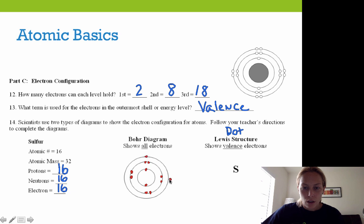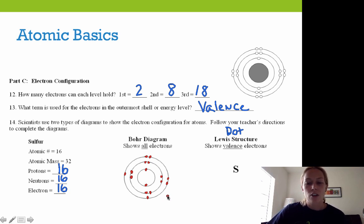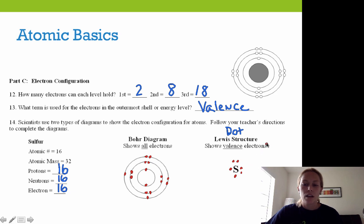We place one, two, three, four, five, six electrons in the outermost energy level. Counting the valence electrons in the outermost shell — one, two, three, four, five, six — there are six valence electrons. The Bohr diagram shows all the electrons in the various energy levels for sulfur. For the Lewis dot structure, which shows only the valence electrons, sulfur has six, so we show one, two, three, four, five, six dots around the element symbol. That's our Bohr diagram and our Lewis dot structure.